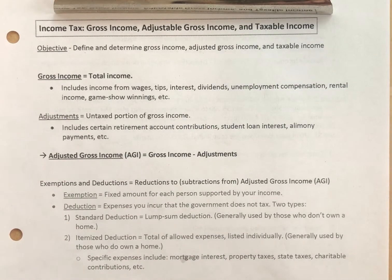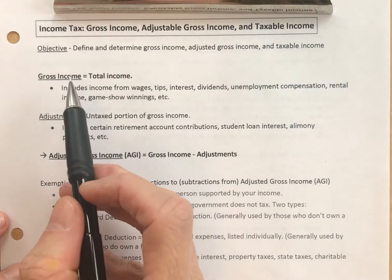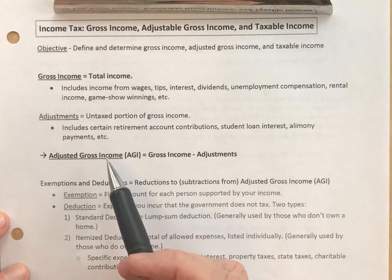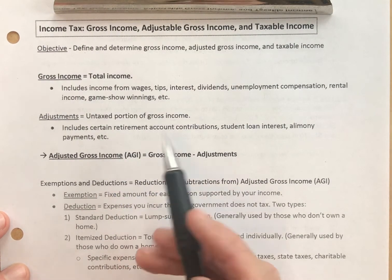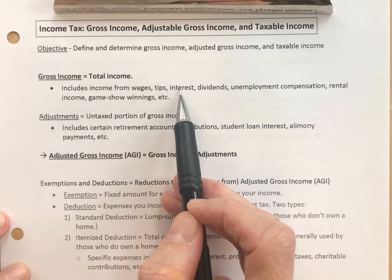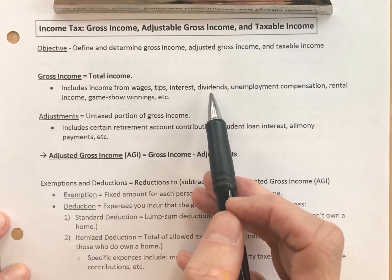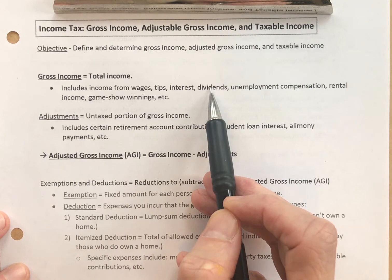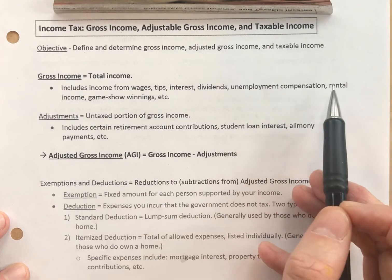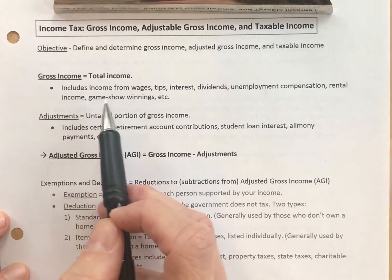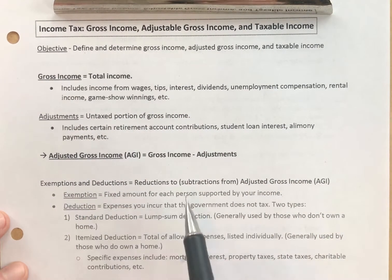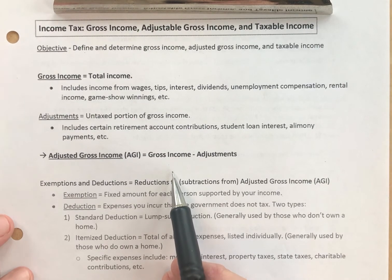So some definitions — this video has a fair amount of them. Your gross income is simply your total income; it's everything that comes to you during the calendar year. It includes income from your wages, your tips, any interest you earn from a savings account or bank account, any dividends from stock purchases, unemployment compensation, income from rental property, anything you win from a game show or lottery, etc.